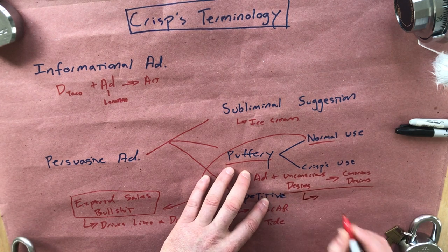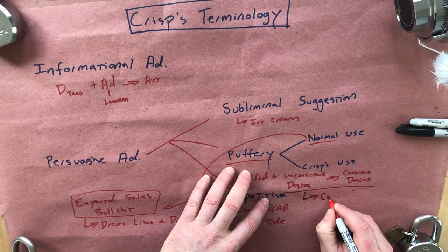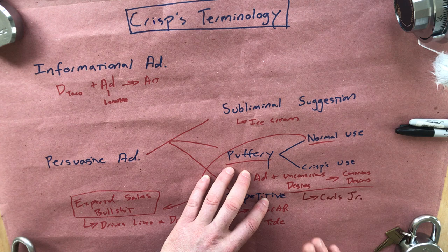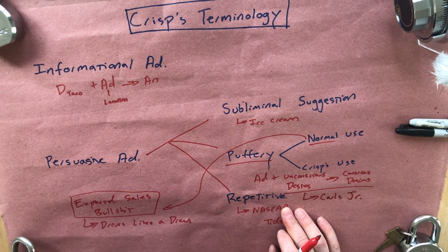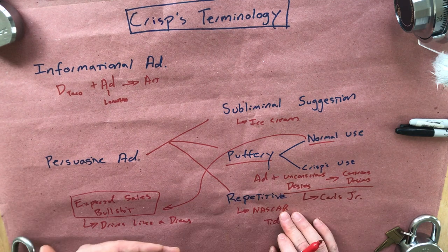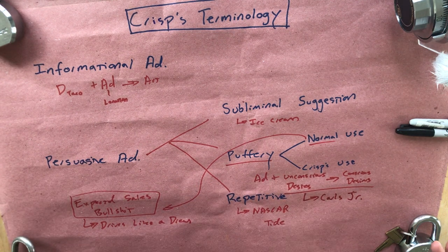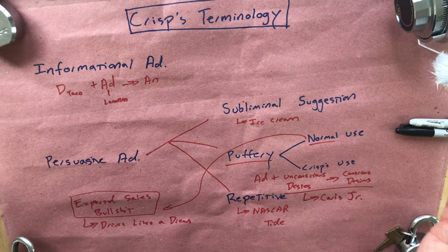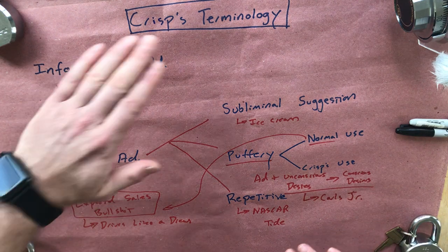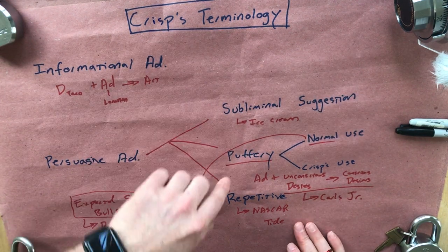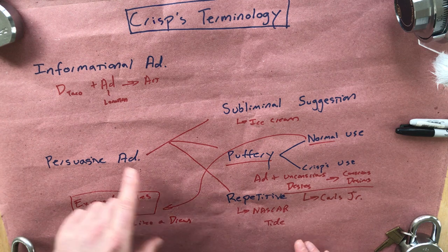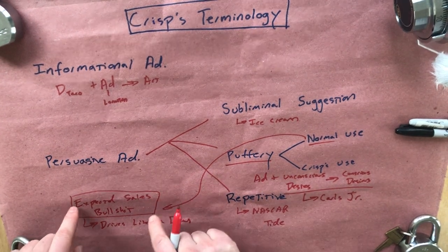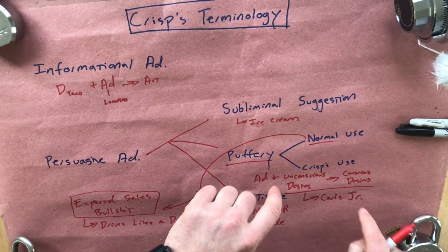I'll talk about this elsewhere. The example, again from students in a past class — because you guys are always way better at this than me — is the sort of old, notorious, sexist Carl's Jr. ad campaigns with a mostly naked model and a hamburger showing up somewhere along the way. So that's the basic terminology and basic division. Don't get distracted by Professor Google into thinking he's talking about normal puffery, because he's talking about something very, very different.